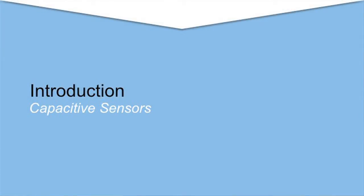Let's get started with capacitive sensors. Just to back up a little bit before I actually get into capacitive sensors — there are primarily two types of sensing: resistive sensing and capacitive sensing. How many of you are familiar with resistive and capacitive and the differences between both of them? We'll focus today on capacitive sensors; I'm not going to go into detail on resistive technology.